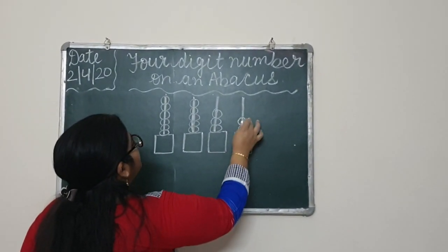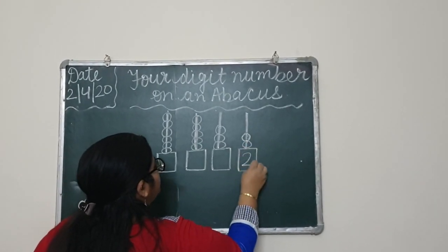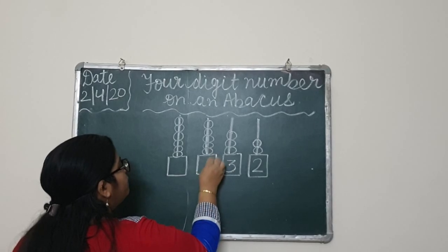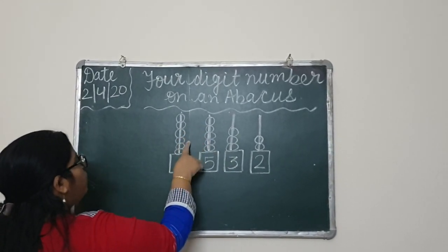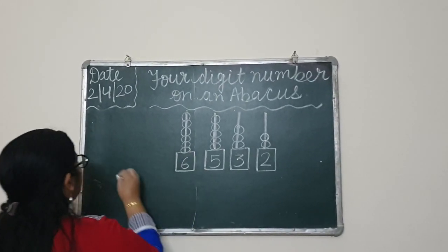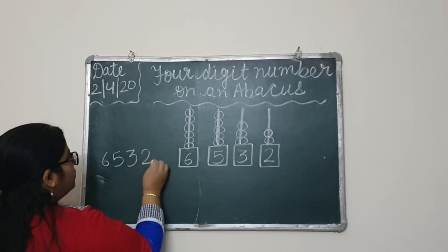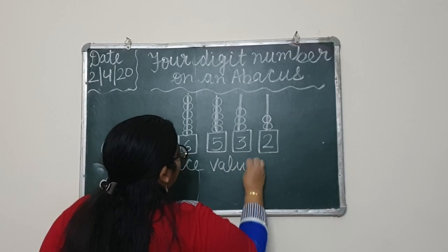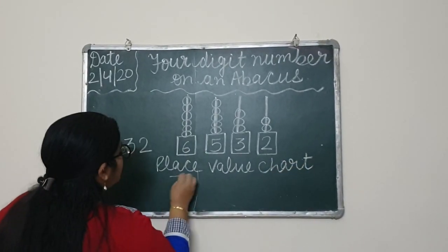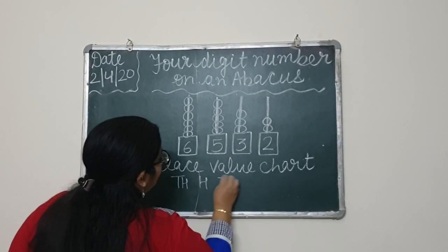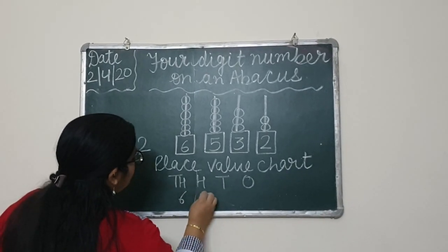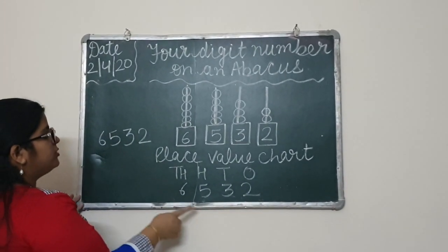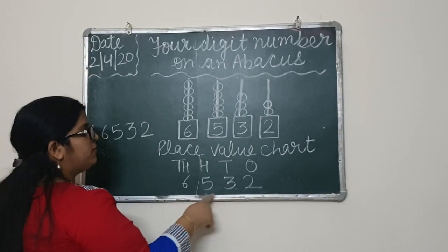Now we take another example. Count the beads: ones — one, two; tens — one, two, three; hundreds — one, two, three, four, five; thousands — one, two, three, four, five, six. We get the number 6, 5, 3, 2. In the place value chart we write six thousand five hundred thirty-two.